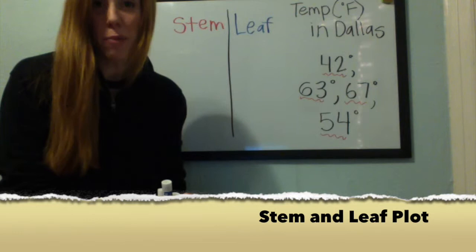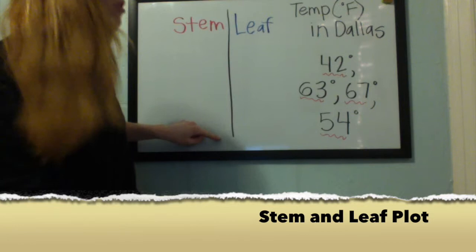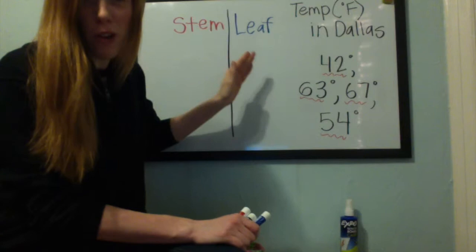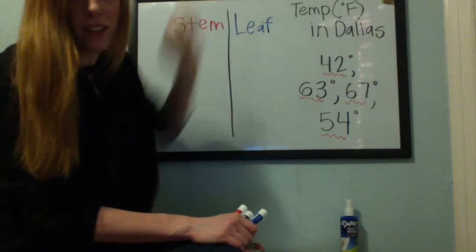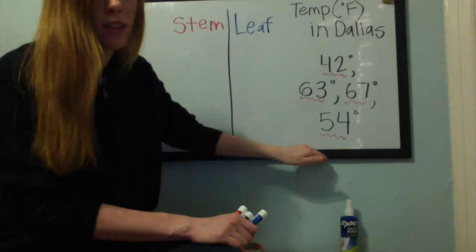Now this is a stem and leaf plot. A stem and leaf plot is going to have a vertical line which separates the stem from the leaf. Just like every other graph, we have our title — which is temperature, degrees Fahrenheit, in Dallas. From this information, we're going to take these data points and place them into our stem and leaf plot.